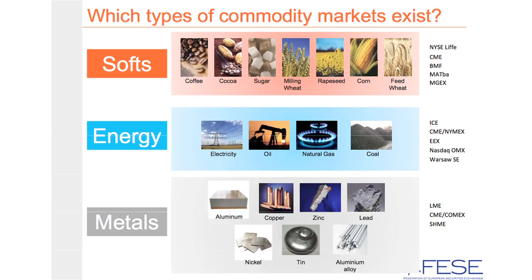Before we start the debate, let's look at the families. We have three families here that are actually important. First, we have the softs, and you will see in the first picture — I hope those at the back of the room and those hidden behind the cameras can still see them. Coffee, cocoa, sugar, wheat, rapeseed, and corn are softs. So this is the agricultural family.